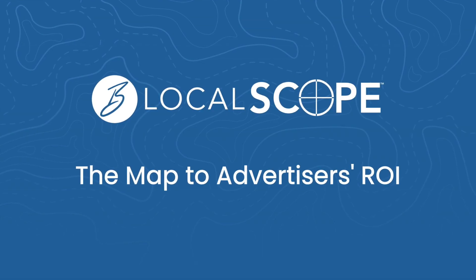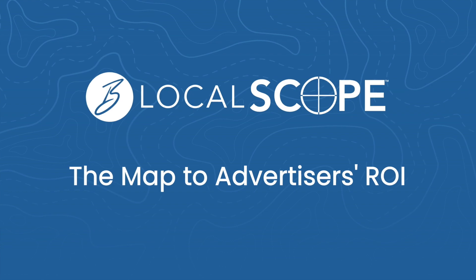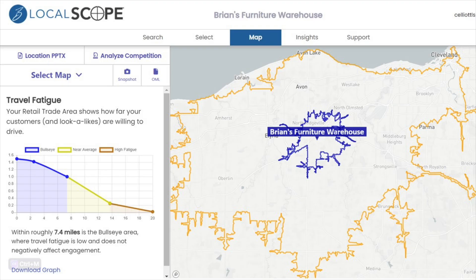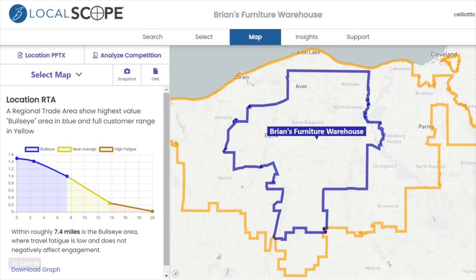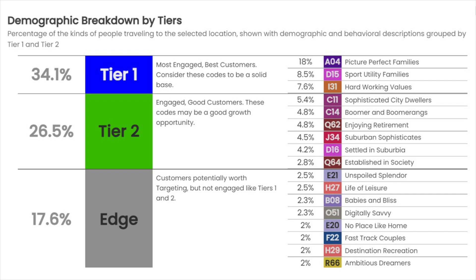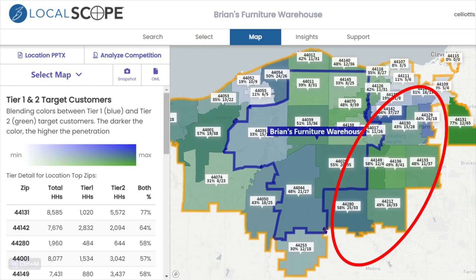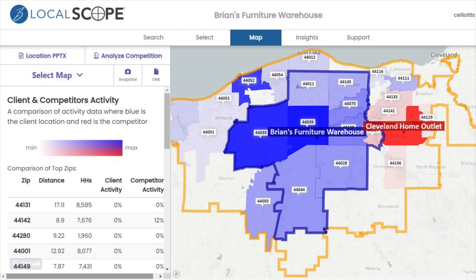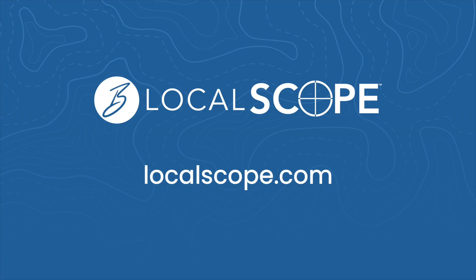LocalScope. Business owners might tell you they already know who their customers are, but do they? Really? Using GPS data from smartphones, LocalScope unlocks powerful insights into customer behavior and psychographics by mapping travel patterns from doorstep to storefront. But it goes beyond that. It also maps the competitors' customers. Want to give it a try? Just go to LocalScope.com and fill out the contact form.